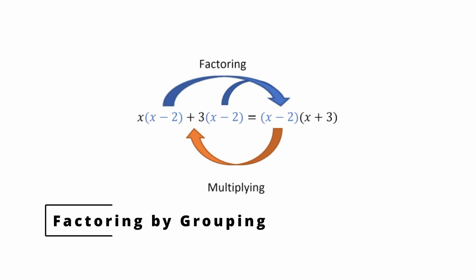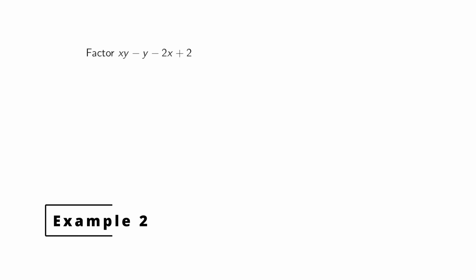So if you ended up with x minus 2 times x plus 3, you can simply redistribute the x minus 2 to the x and the 3. Your last step is to multiply everything back out individually and make sure you got what you started with. Let's do another example.